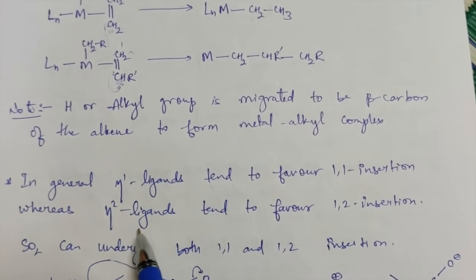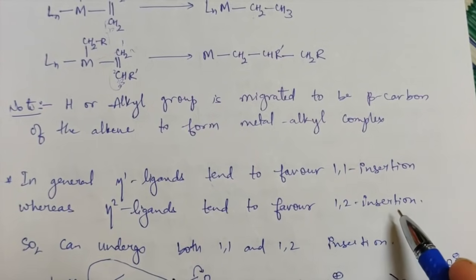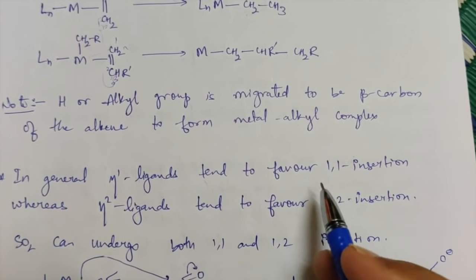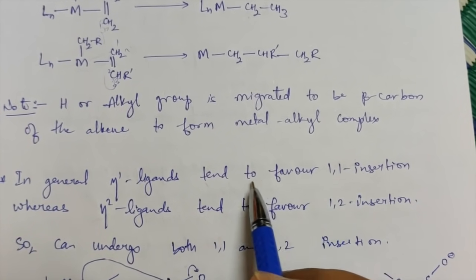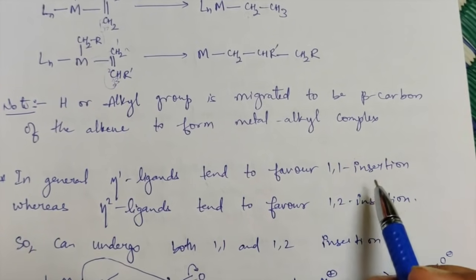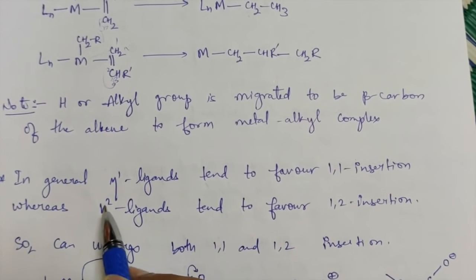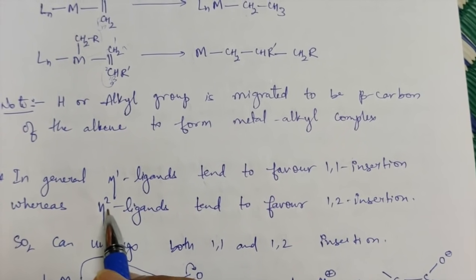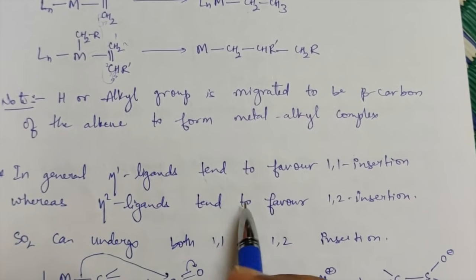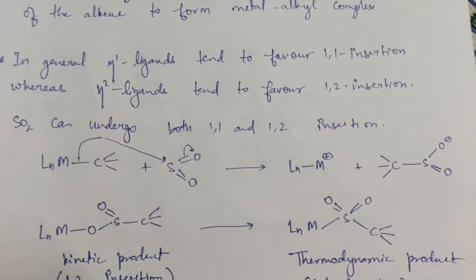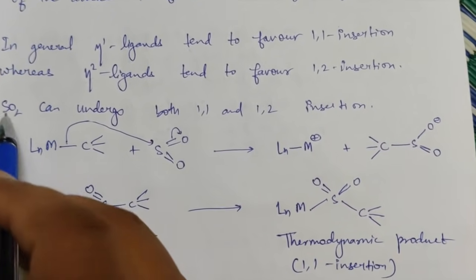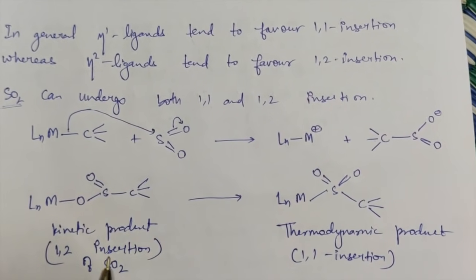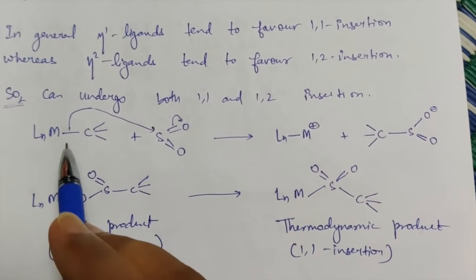In general, eta-1 ligands tend to favor 1,1 insertion whereas eta-2 ligands — those that can coordinate up to two units — tend to favor 1,2 migratory insertion. For example, CO ligand favors 1,1 migratory insertion because it's an eta-1 kind of ligand, whereas alkene or ethylene ligands are eta-2 and favor 1,2 insertion. SO2 is an exceptional case — it can undergo both 1,1 and 1,2 insertion.